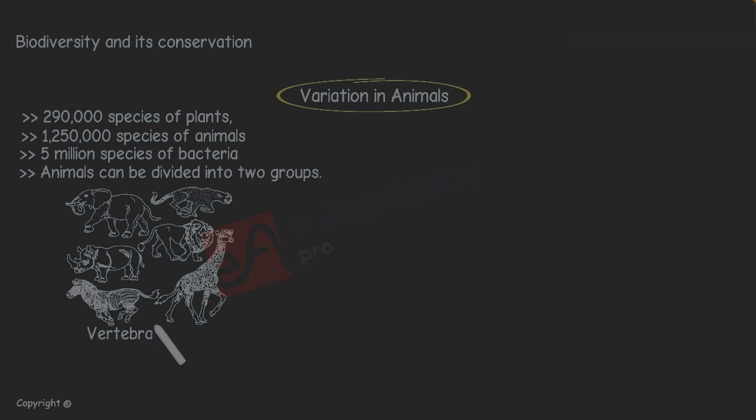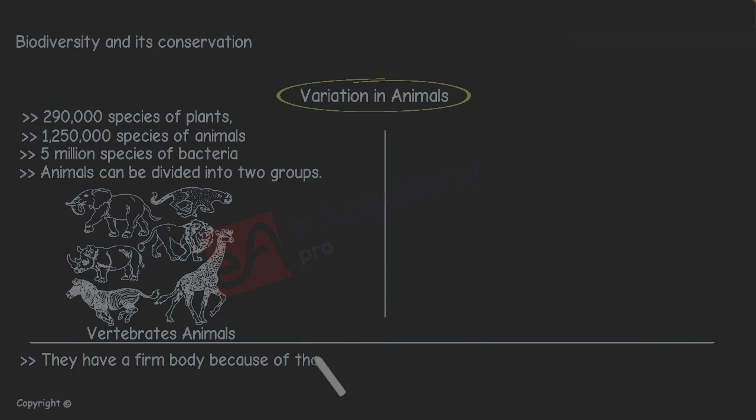Vertebrate and invertebrate. Vertebrates have a backbone. They have a firm body because of the muscles that connect to their skeleton.